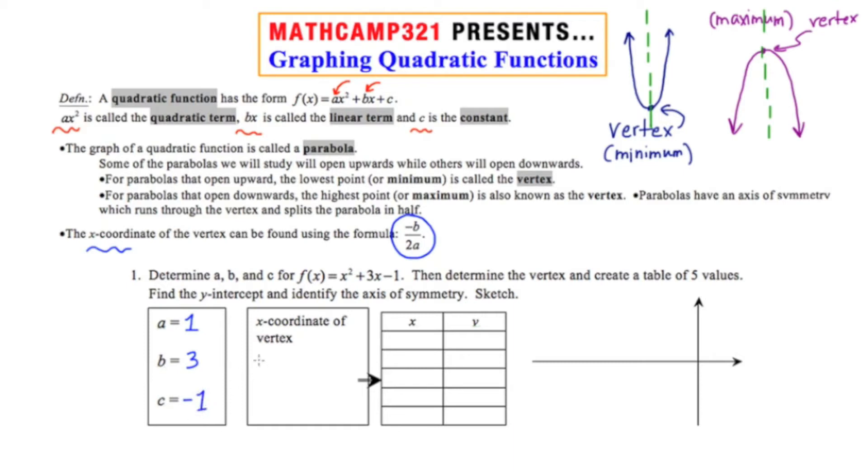Now the x coordinate of the vertex can be found using the formula negative b over 2a. So specifically for this problem, it's going to be the opposite of b, or negative 3, over 2a, or 2. So the x coordinate of the vertex is negative 3 halves, or negative 1.5.